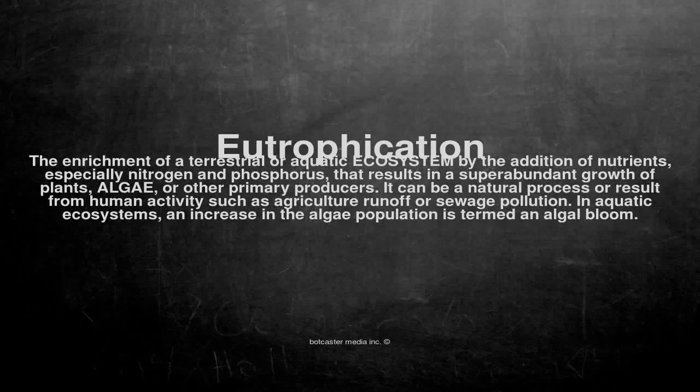Eutrophication: the enrichment of a terrestrial or aquatic ecosystem by the addition of nutrients, especially nitrogen and phosphorus, that results in a superabundant growth of plants, algae, or other primary producers.